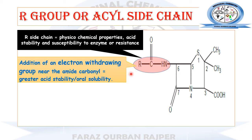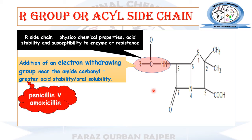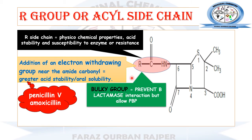The acyl amino side chain substitution is responsible for acid sensitivity, acid stability, enzyme sensitivity, and enzyme stability. If we substitute this R with an electron-withdrawing group — meaning an electron-withdrawing group is present near this carbonyl carbon — the resulting penicillin will have more acid stability. Once a penicillin is stable towards gastric acid, it can be used for oral formulation. Examples of penicillins with electron-withdrawing groups that are acid-stable and suitable for oral formulation include Penicillin V and amoxicillin.